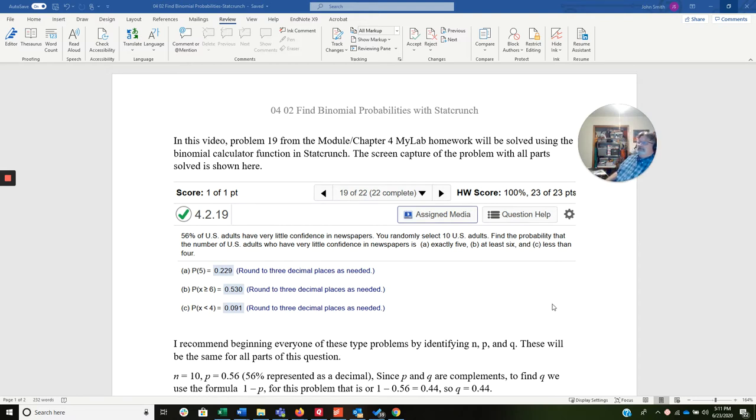Okay, this will be my third try at this video. Hopefully we'll get it this time. We're going to work problem 19 from the module chapter 4 homework, and we're going to use the binomial calculator function in StatCrunch.